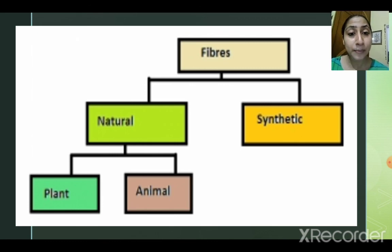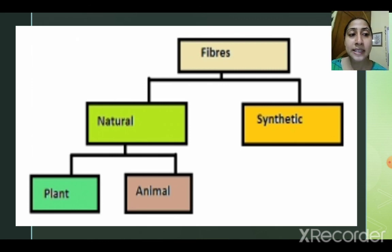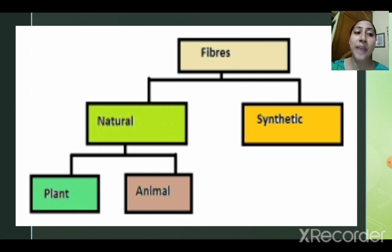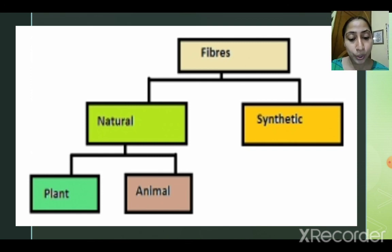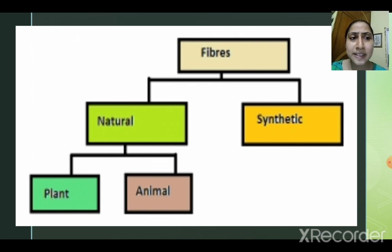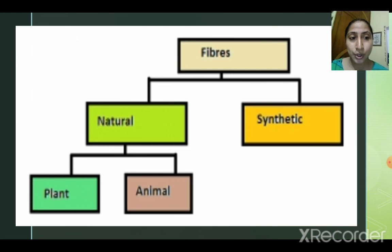We have different types of fibers — natural fiber and synthetic fiber. You can see here in the table. Natural fibers are the fibers that we get from plants and animals. Whereas synthetic fibers are man-made; they are made in factories.